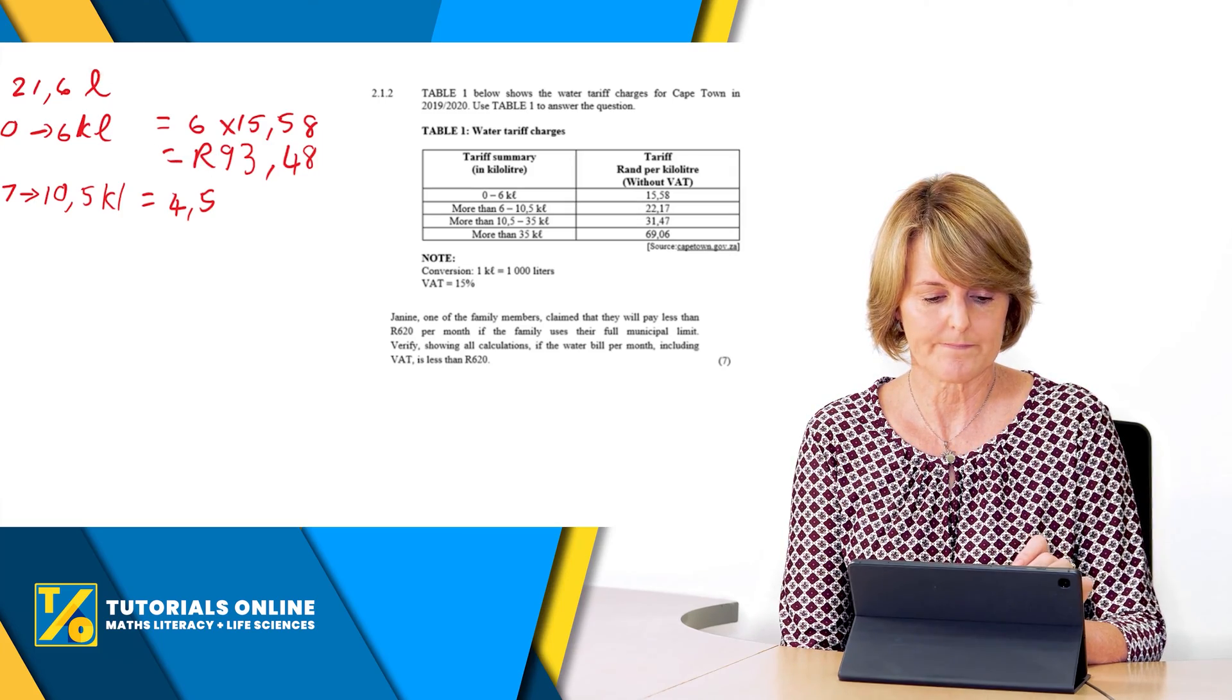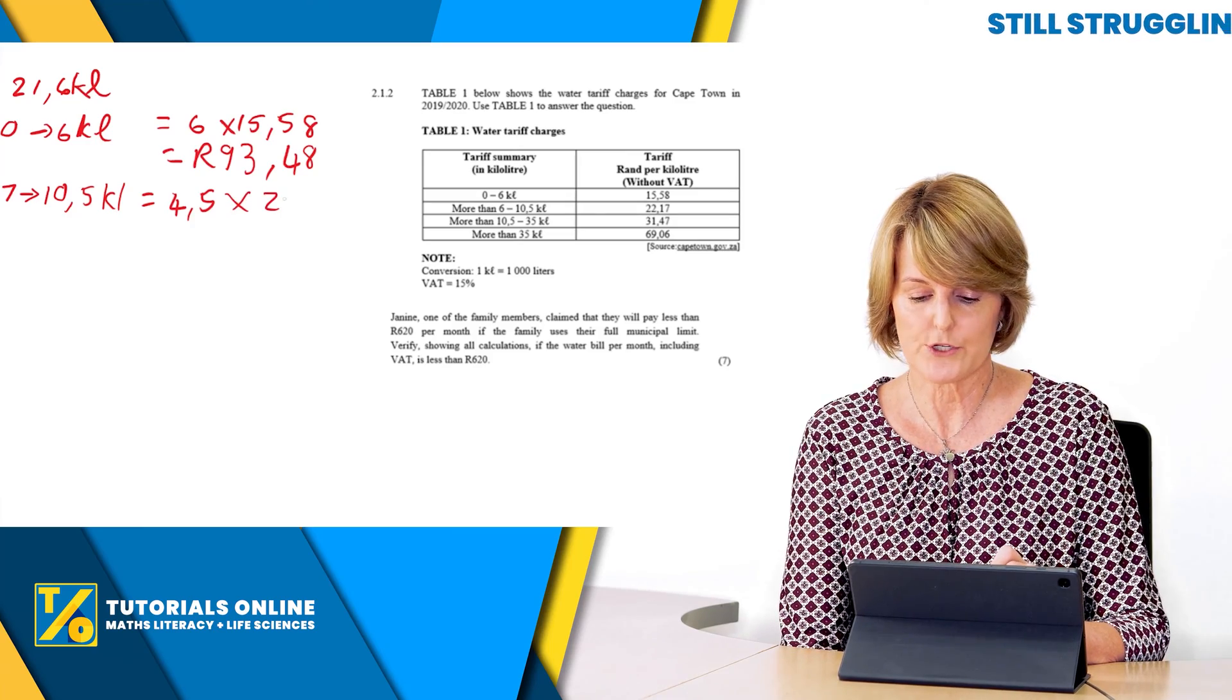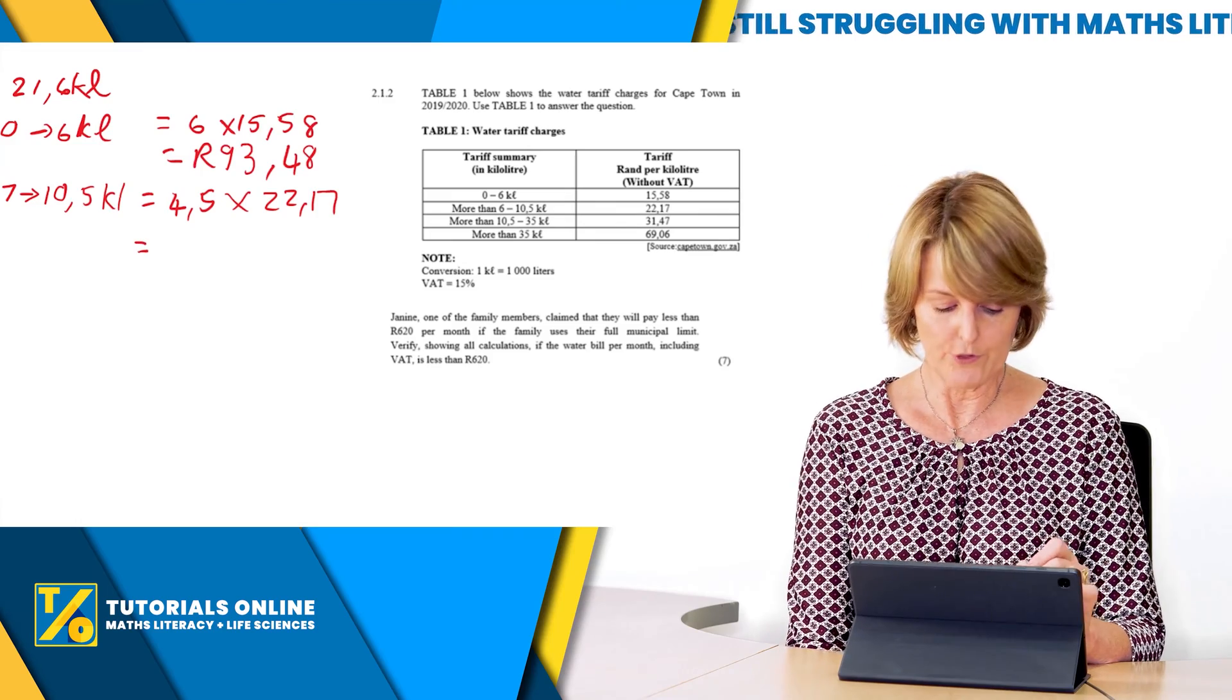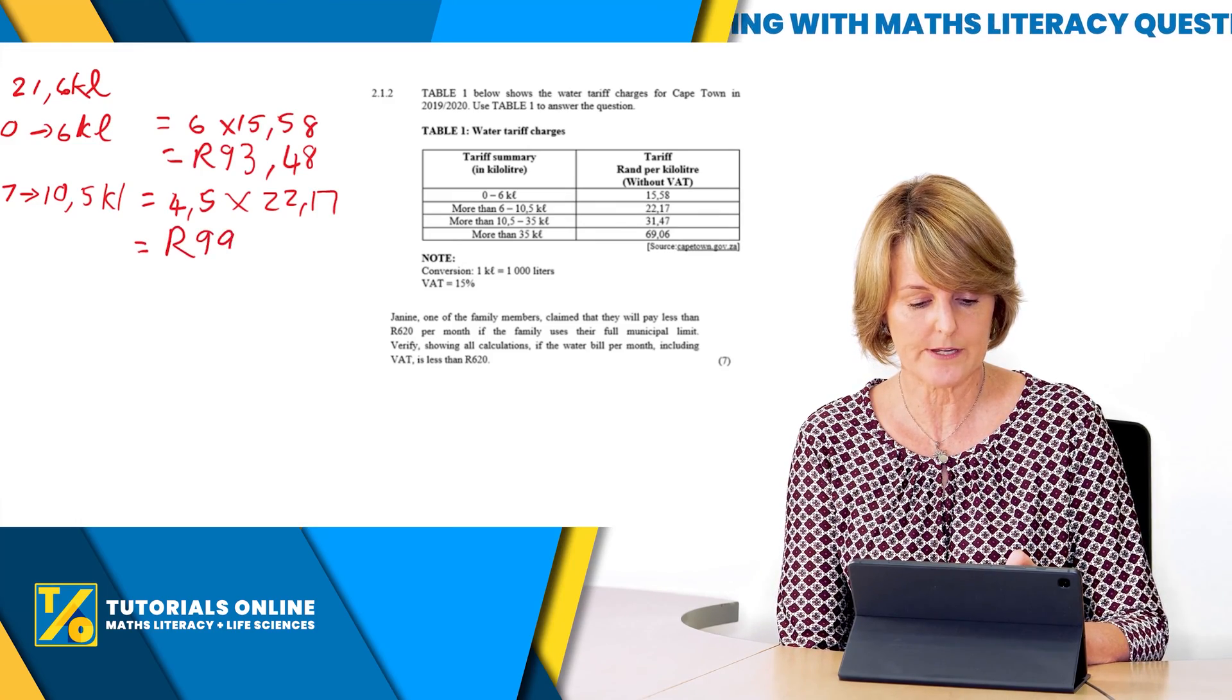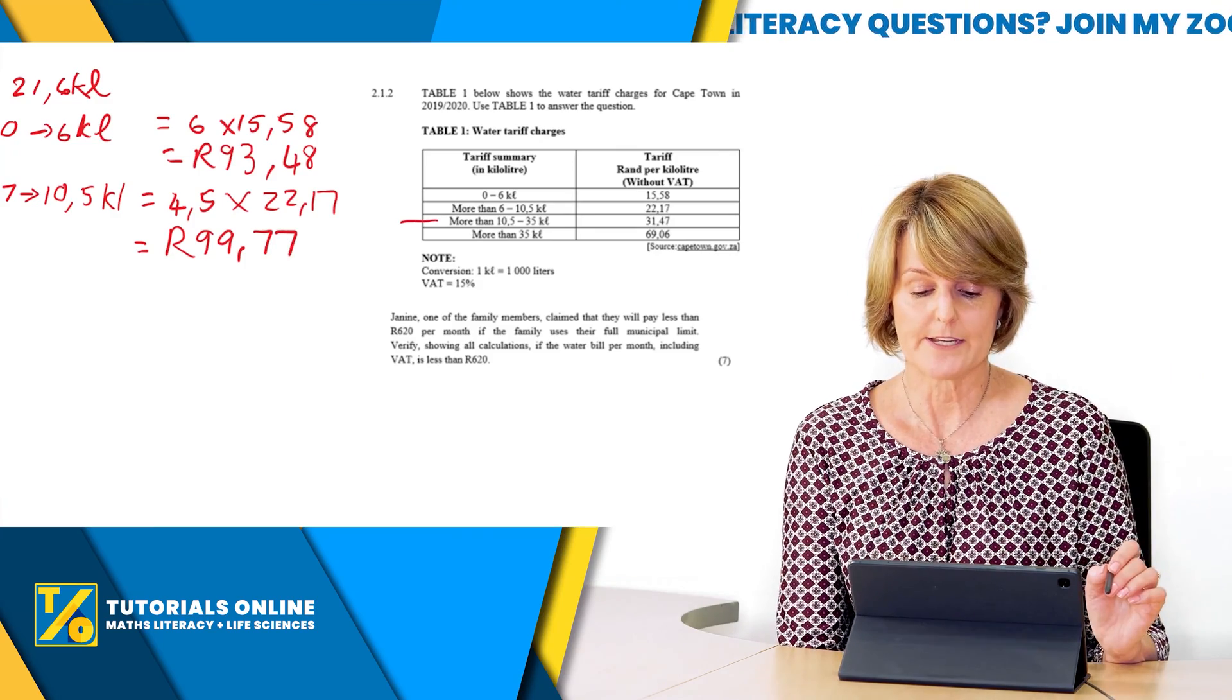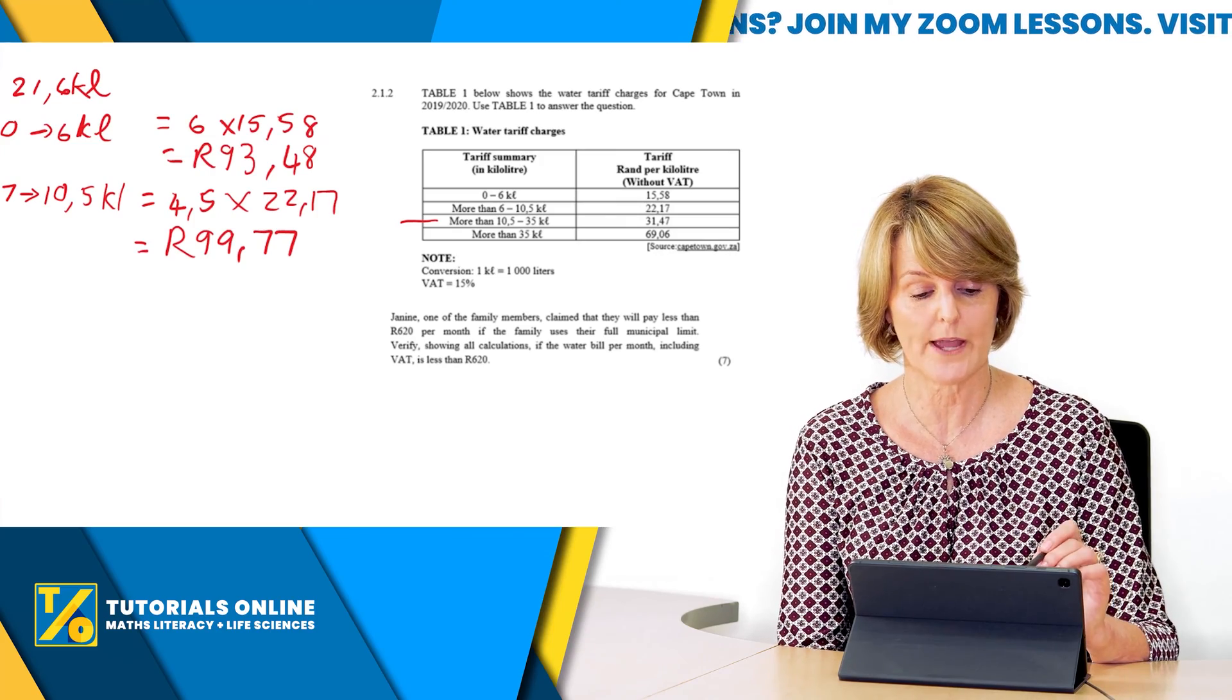So now we're going to put 4.5 kilolitres times 22.17, and if you work that one out you get 99 rand 77. Then we're going to go to the next category and it says 10.5 to 35 kilolitres, but how much must we actually go to? We must only go up to 21.6.